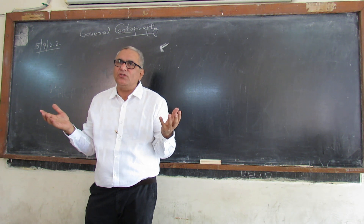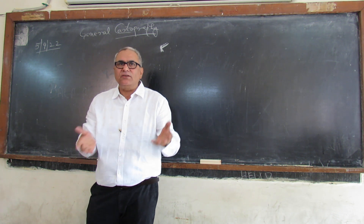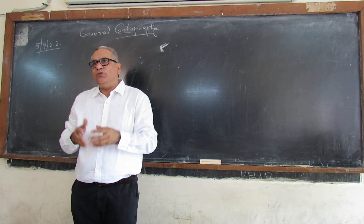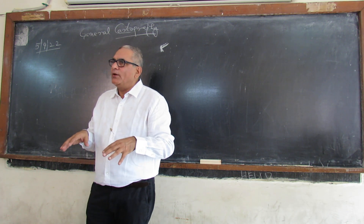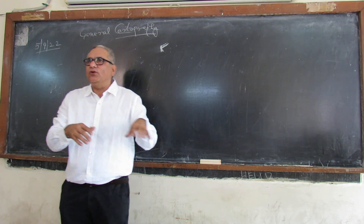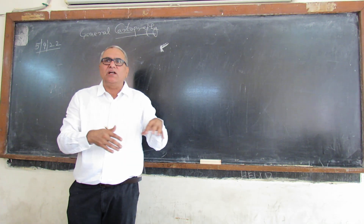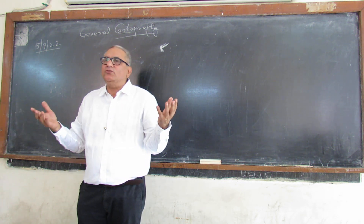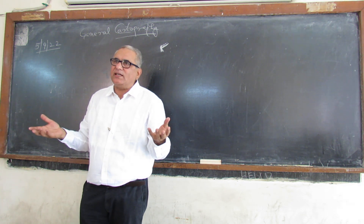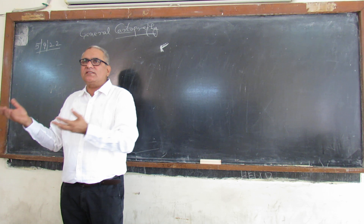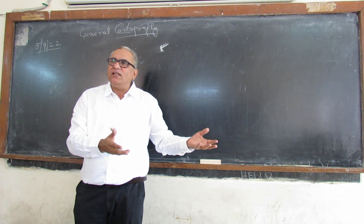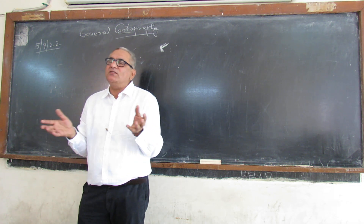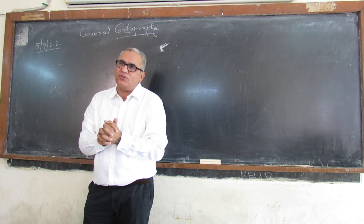So we have the branches of geography. Like we have physical geography. Within physical geography, we have geomorphology, climatology, oceanography, pedology, soil science, vegetation, drainage system, water, and hydrology. These are the branches of physical geography.